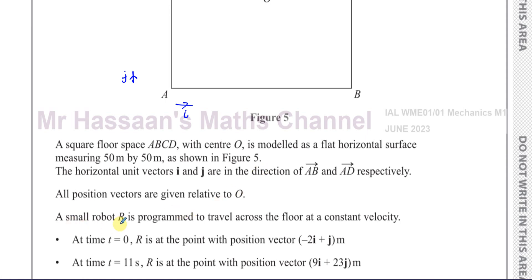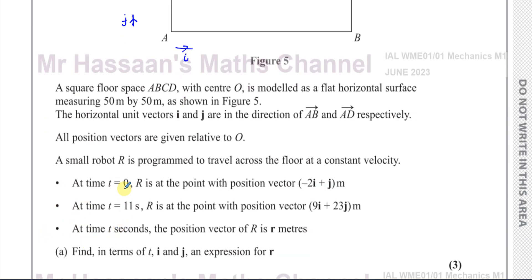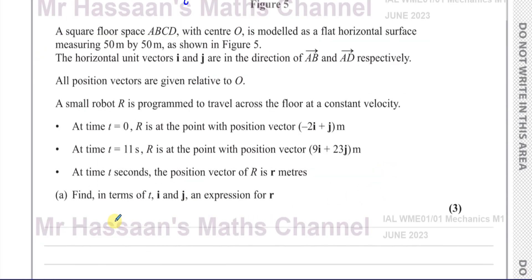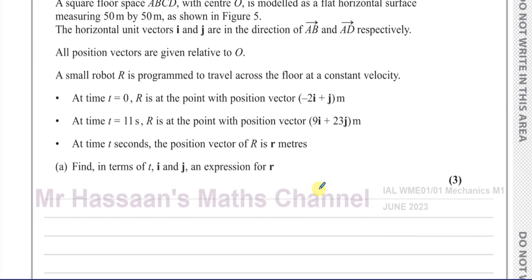A small robot R is programmed to travel across the floor at constant velocity. At time t equals 0, R is at the point with position vector minus 2i plus j. At time t equals 11 seconds, R is at the point with position vector 9i plus 23j meters. At time t seconds, the position vector of the robot R is r meters. Find in terms of t, i, and j an expression for r.